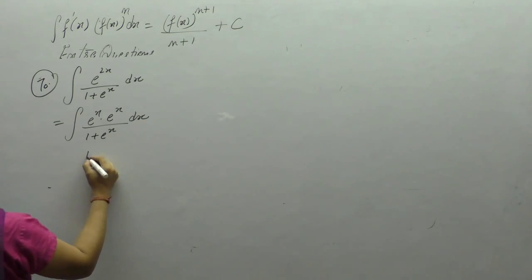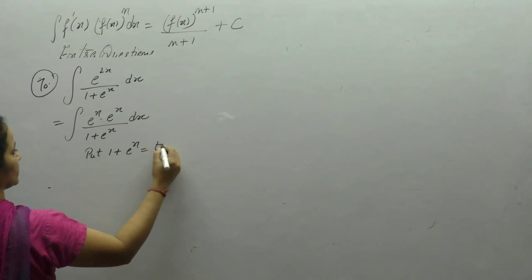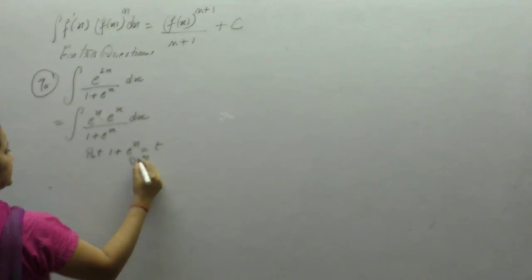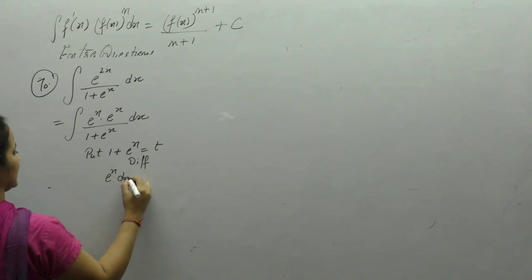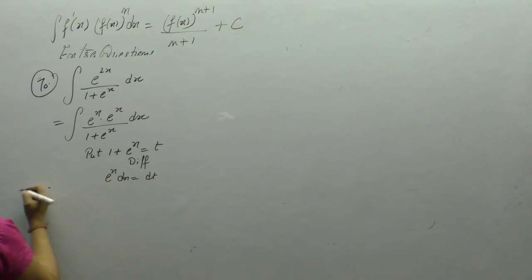Put 1 plus e to the x as t. After differentiating we get e to the x dx equals dt. e to the x dx is dt.